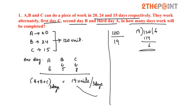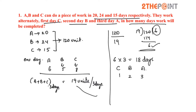The remainder is 6, meaning 6 units of work are left out. They are not working all together — they are working on alternate days. So 6 into 3 equals 18 days. They work for 18 days in alternate days, and then next: first C will work, second day B will work, and third day A will work. So on the 18th day A works, and the next day — the 19th day — C will be working.